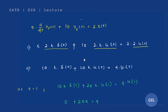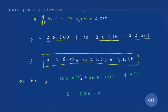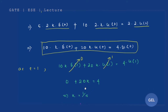Now if you put t = 1 in this equation, you get 10k · δ(1) + 20k · u(1) = 4 · u(1). The delta function δ(1) = 0 because the impulse function is only defined at t = 0; at any other value of t, δ(t) = 0. And u(1) = 1. So we get 20k = 4, giving k = 1/5.